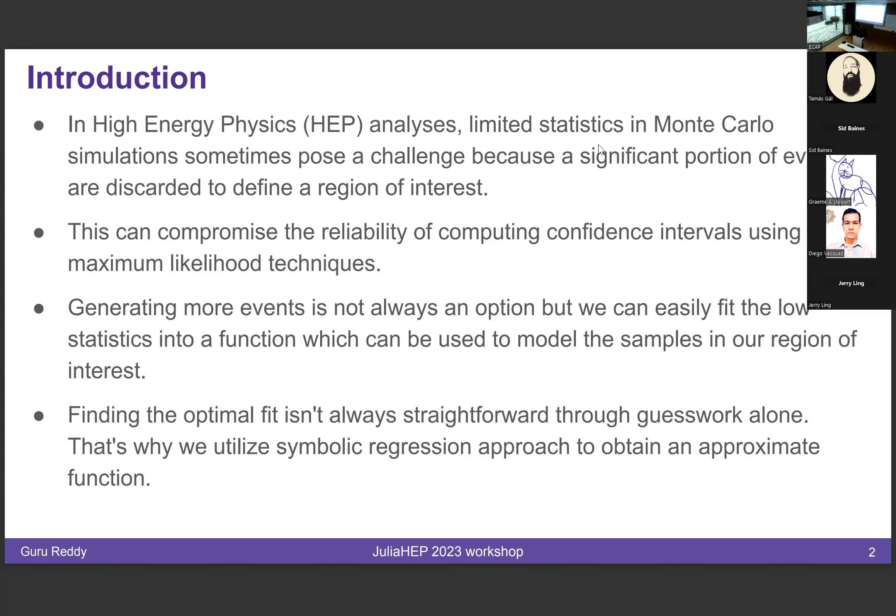Some of you must have experience with ROOT, and we all know that it's not a straightforward thing. We need to start with an a priori function and then give it initial parameters, and that's not a straightforward task. When you have many different kinds of shapes, this becomes an even bigger problem because it's too time-consuming. So the idea is to use symbolic regression to obtain these fits and proceed from there.